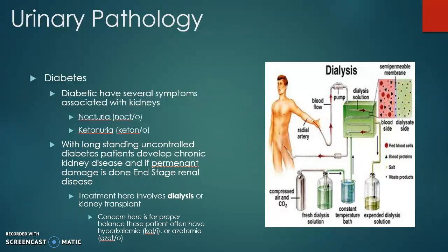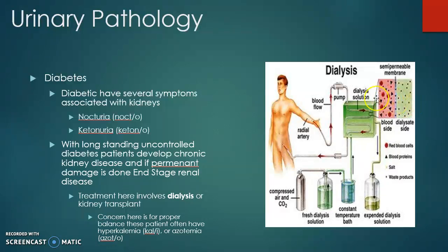Treatment for end-stage renal disease is dialysis or kidney transplant. You do not want to end up on dialysis, so take care of your kidneys. Dialysis means separation across a membrane — that will be on quizzes. Blood is taken out, passes through a solution across a membrane — the dialysate draws waste across that membrane — and then the clean blood is pumped back into the patient. This process takes a couple of hours and is typically done three times a week.